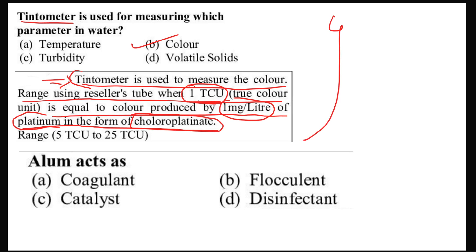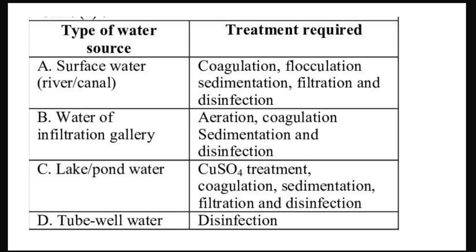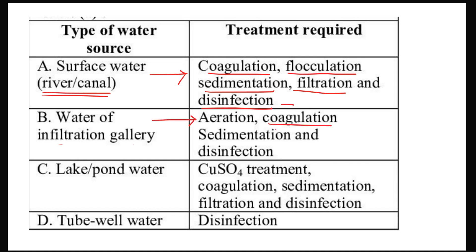Alum acts as a coagulant in drinking water treatment. The water treatment steps for infiltration gallery are: aeration, coagulation, sedimentation, and disinfection. For lake and pond water, copper sulfate treatment is used.